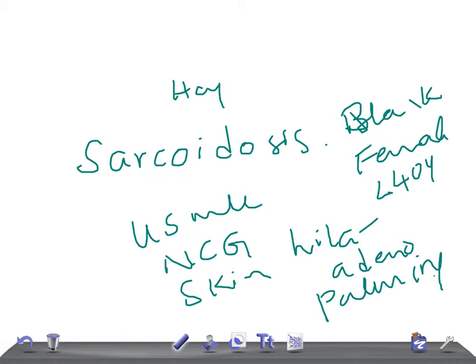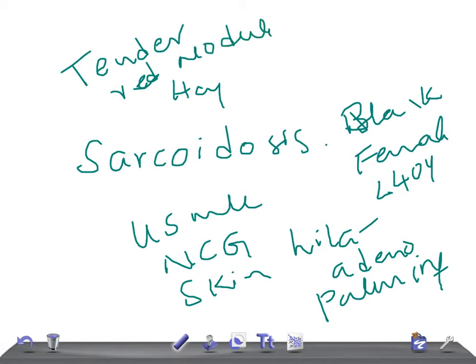The history presentation in the USMLE examination will include chest symptoms in the form of cough, dyspnea, chest pain, fever, malaise, weight loss, and sometimes arthritis. The skin lesions are really very important — they appear as tender red nodules on the shins and arms. Remember: tender red nodules on the shins and arms.